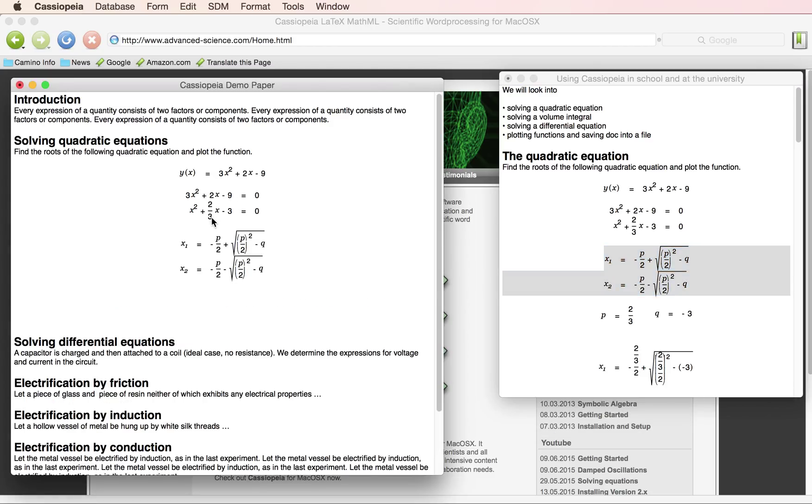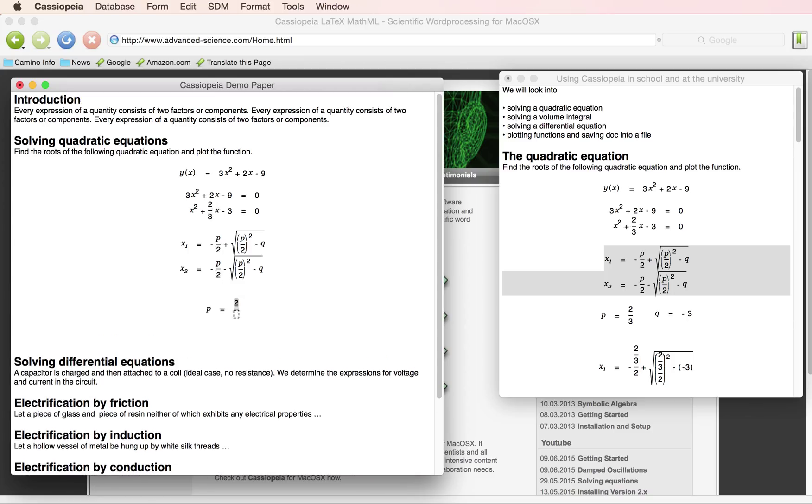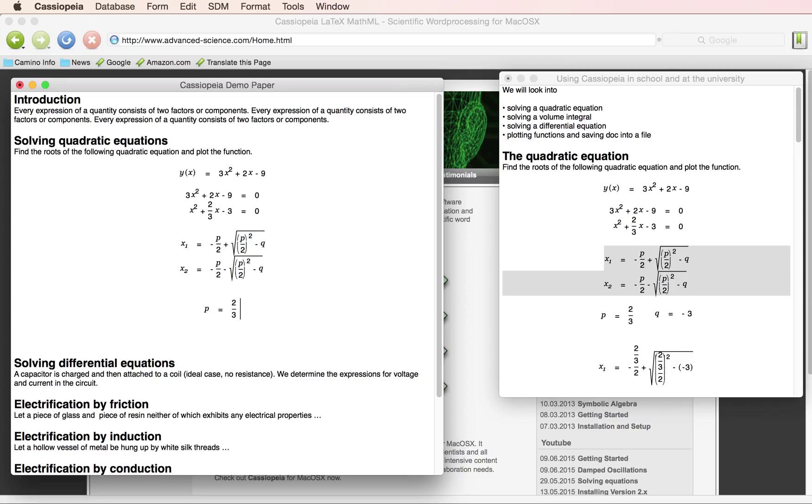In our case we have p with 2 over 3, and q with minus 3.